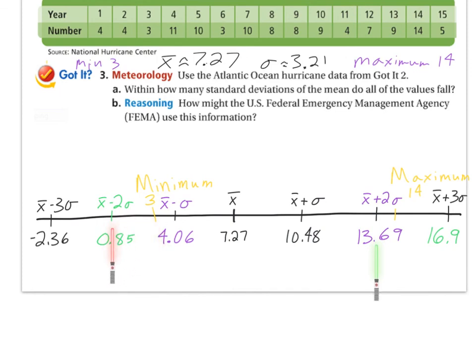Now that does cover the minimum but we haven't covered the maximum yet so we go out one more standard deviation we get up to 16.9 and down to negative 2.36. So in this case even though we cover the minimum in two standard deviations it takes three standard deviations to cover the maximum. So the answer then for this one would be within three standard deviations of the mean that's where all of the data fall. So thanks for watching and if you have any questions make sure you let me know.